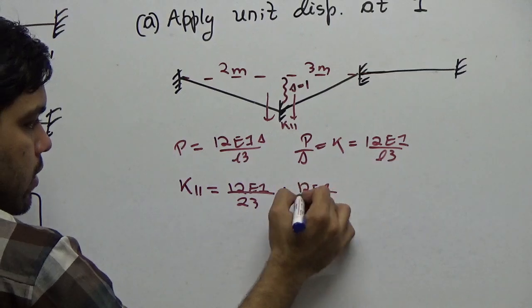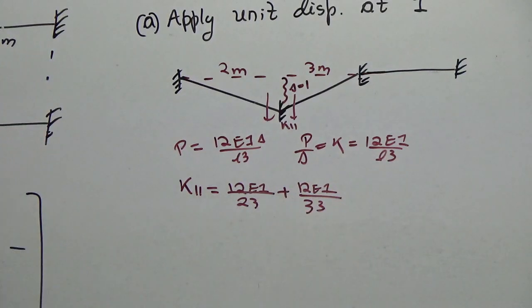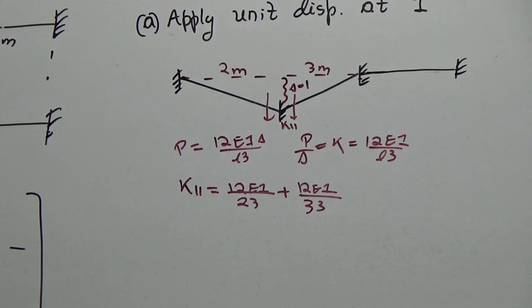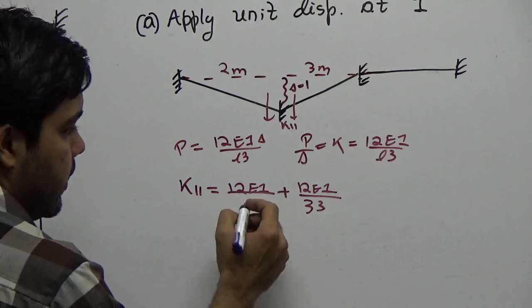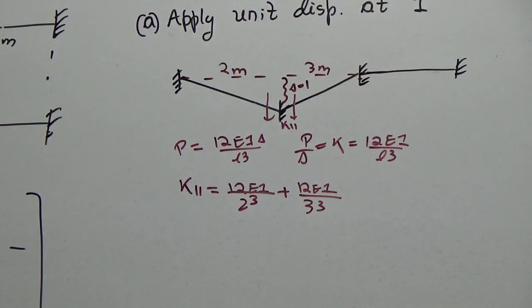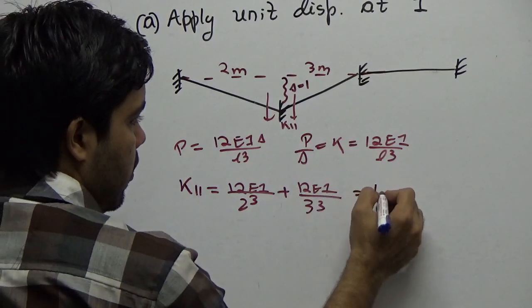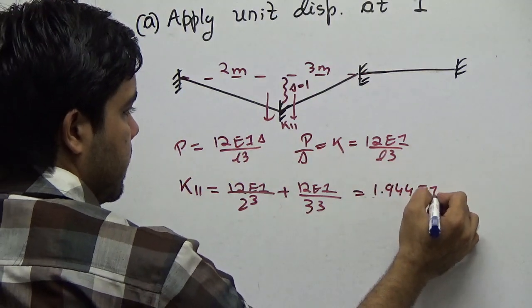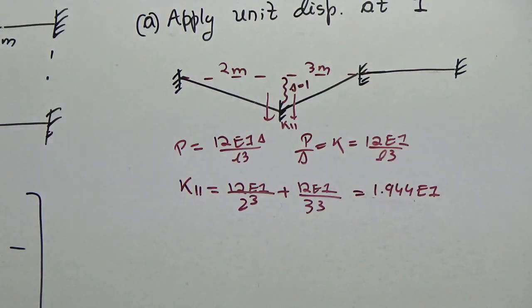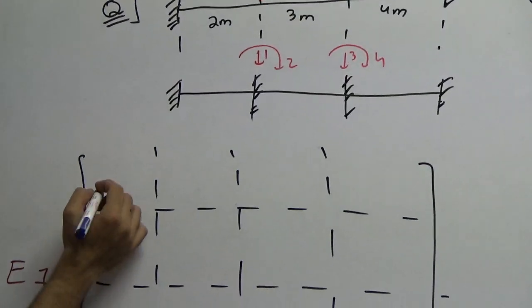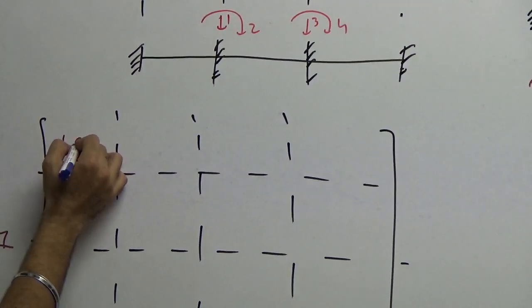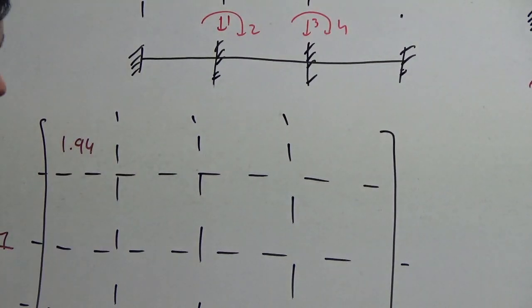You have 12EI upon 2 cubed plus that side also, 12EI upon 3 cubed. This is your k11. When you solve this, it's a uniform I. So 12 by 2 cubed, it's not 23, it's 2 cubed, plus 12 by 3 cubed. You get 1.944EI. I will just put EI outside. And here I will put the first value as 1.944.